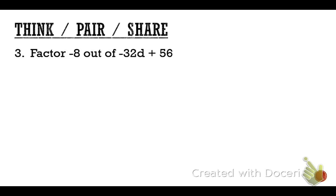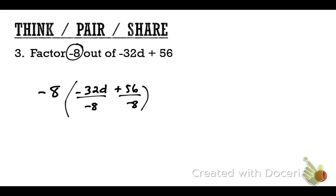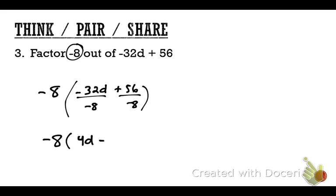Final problem of the day: factor out negative 8. Take negative 8 out of the original problem and rewrite it, dividing each term by negative 8. Drop down the negative 8. 32D divided by negative 8 gives negative 4D. 56 divided by negative 8 is negative 7. Final answer: negative 8(−4D − 7).